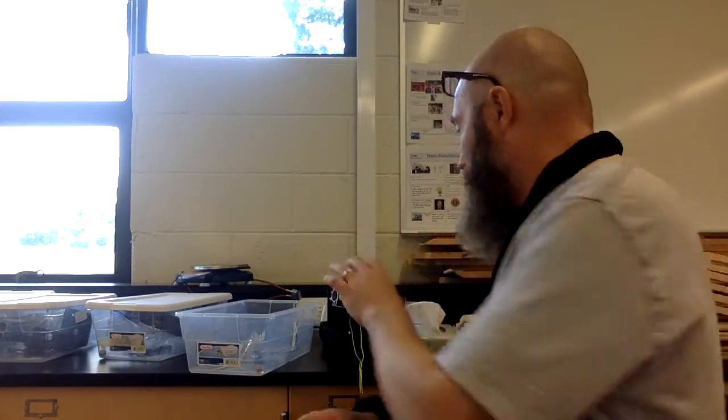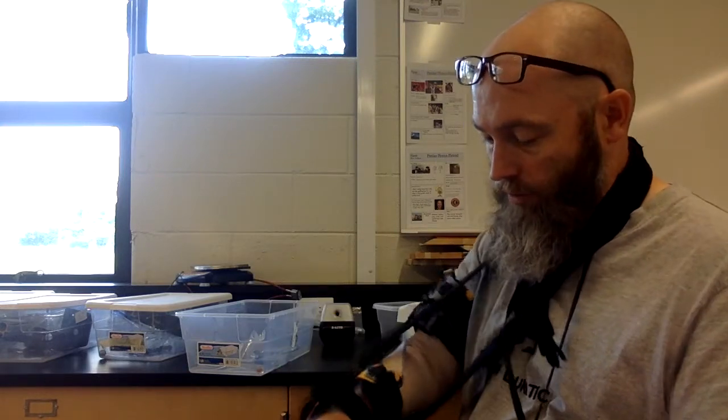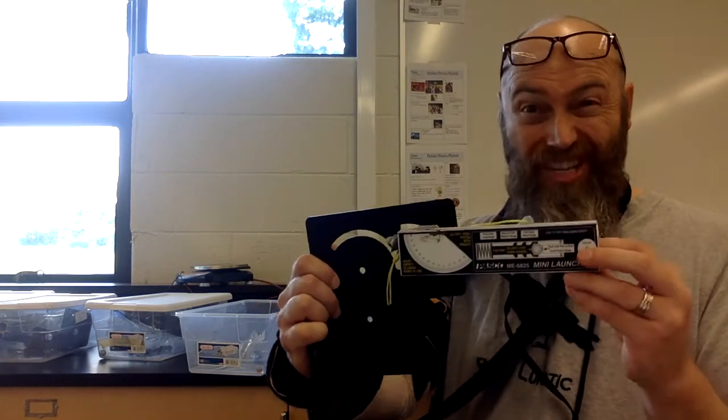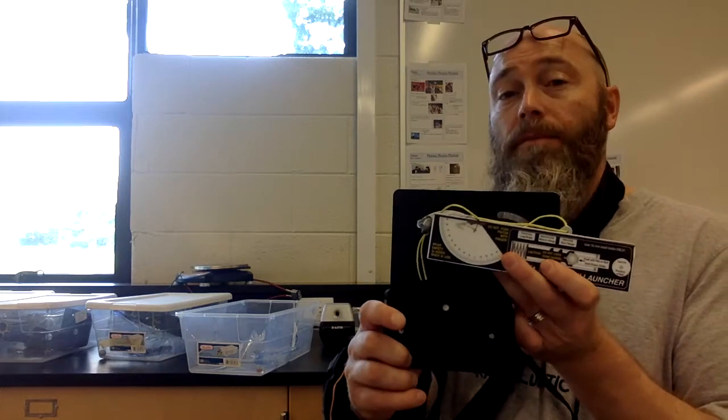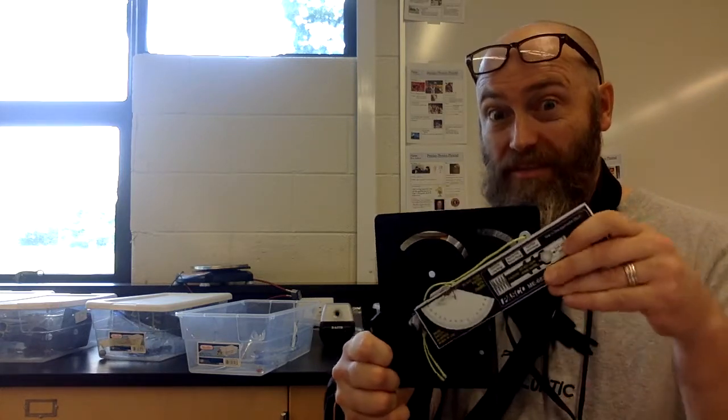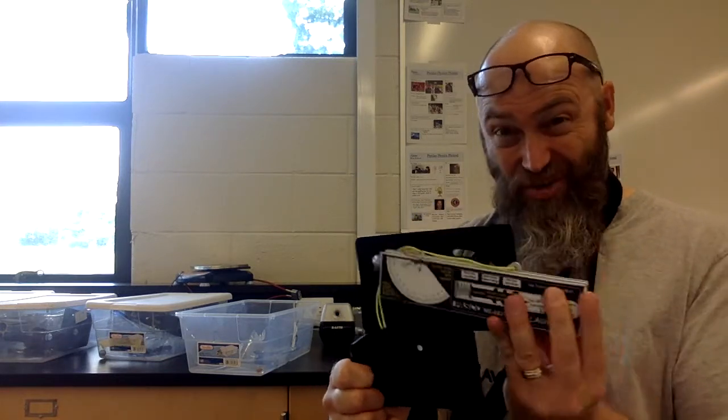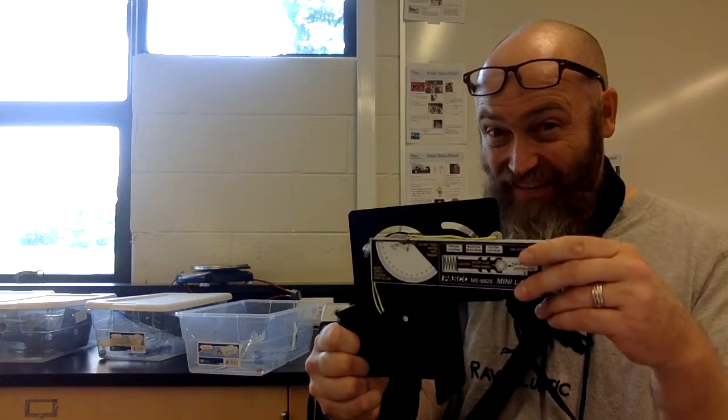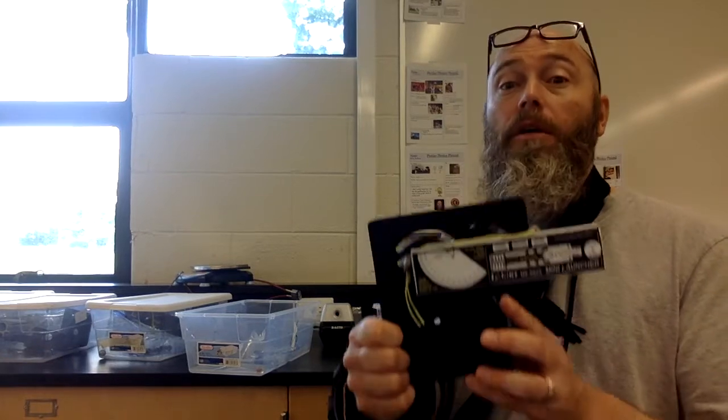So a couple of things I want to make sure is 100% clear with these little launcher dealies. These launcher dealies are designed, there's one click, two clicks, three clicks. You're going to have to decide as a group how many clicks you're doing. But these launchers are designed so that if you go three clicks, for example, with this thing, no matter what angle I shoot it at, if I shoot it straight up, if I shoot it at an angle of 45 degrees, if I shoot it down at an angle, if I shoot it horizontally, no matter what angle I shoot it at,